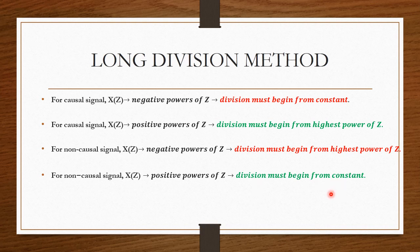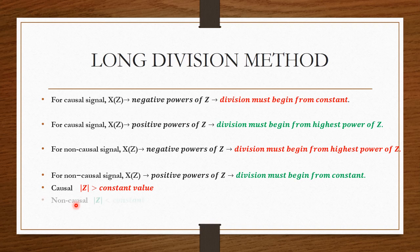Sometimes in a problem they won't state whether it is a causal or non-causal signal — instead they will give the modulus of Z. If the modulus of Z is greater than a constant value, then it is a causal signal. Similarly, if the modulus of Z is less than a constant value, then it is a non-causal signal. These are the important properties to keep in mind before solving using the long division method.